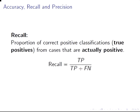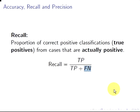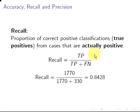Recall is the total number of correct positive classifications — the true positives — from the number of cases that are actually positive. Remember, the false negatives are actually positive but predicted to be negative. We have 1,770 true positives, and the total actual positives are 1,770 plus 330, giving a recall of 0.8428. Consider that we have 330 false negatives — those might be patients we failed to diagnose.